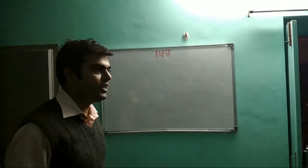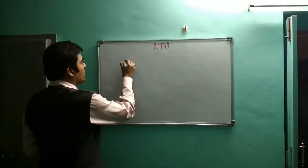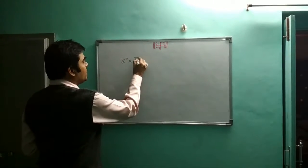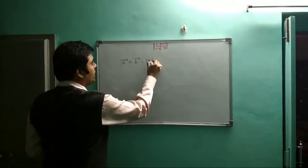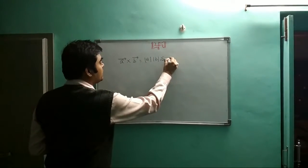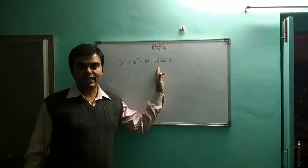Today's topic is the cross product, A × B. The cross product formula is: A × B equals mod A, mod B, sine theta.